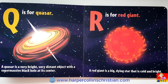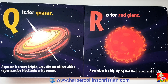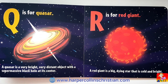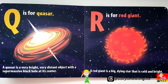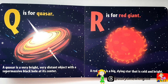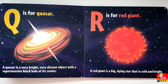Q is for Quasar. A quasar is a very bright, very distant object with a supermassive black hole at its centre. R is for Red Giant. A red giant is a big dying star that is cold and bright.